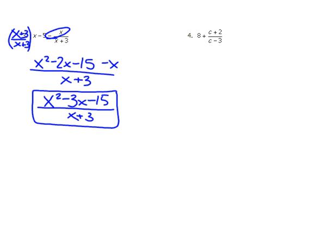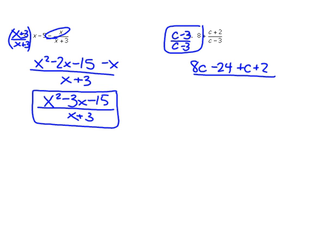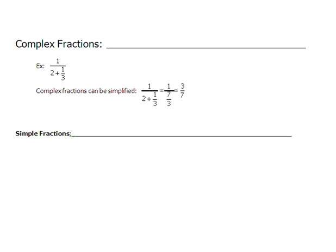For example four, I multiply the first fraction by c minus three over c minus three. That gives me eight c minus twenty-four from the first part, then just plus c plus two over c minus three, which combines to give nine c minus twenty-two over c minus three. And that, my friends, is simplifying mixed expressions.